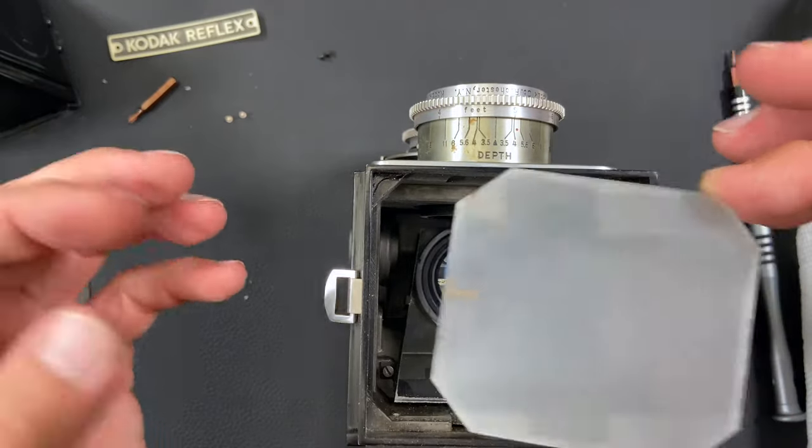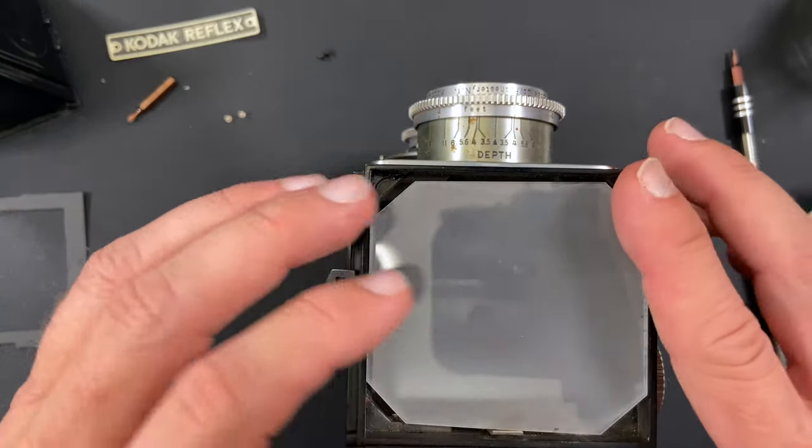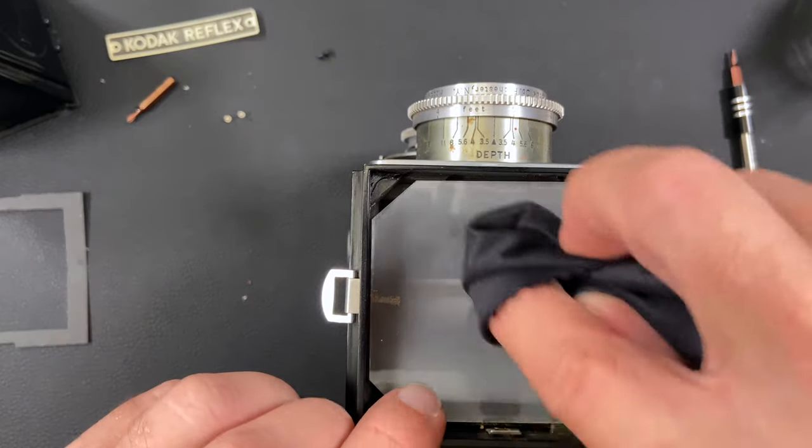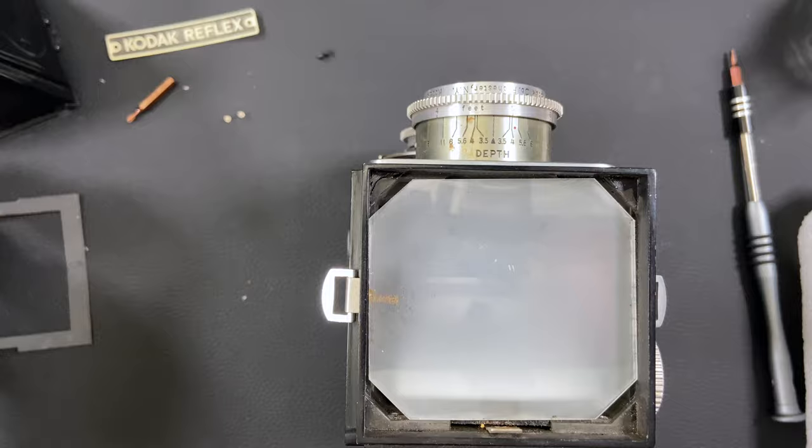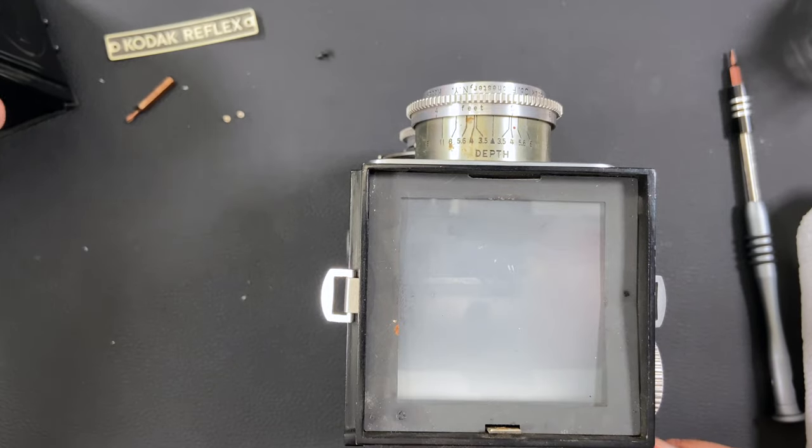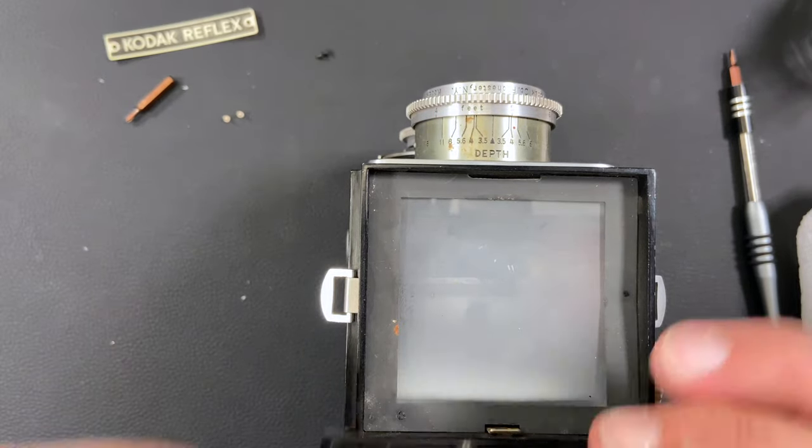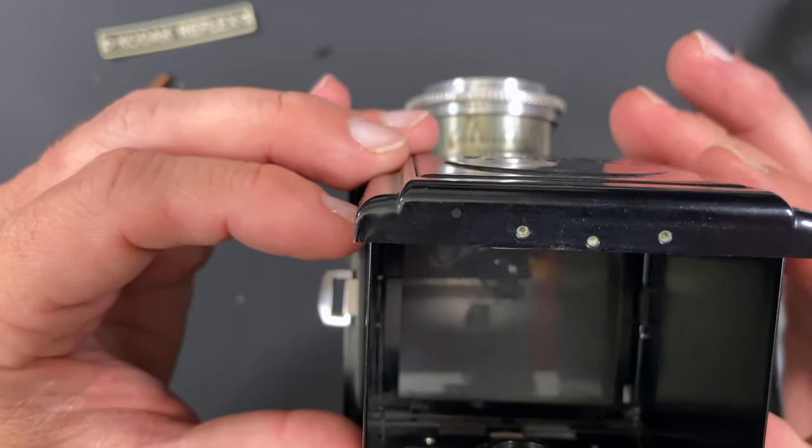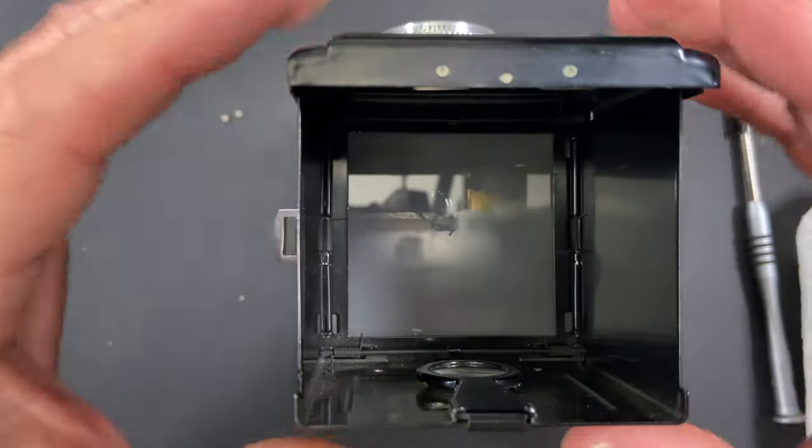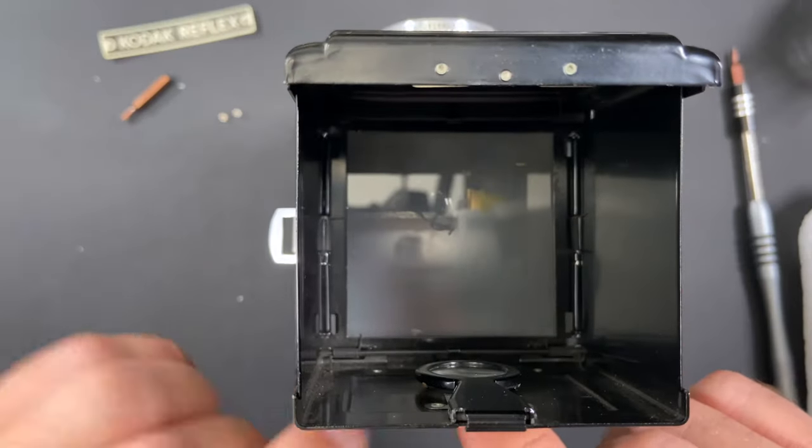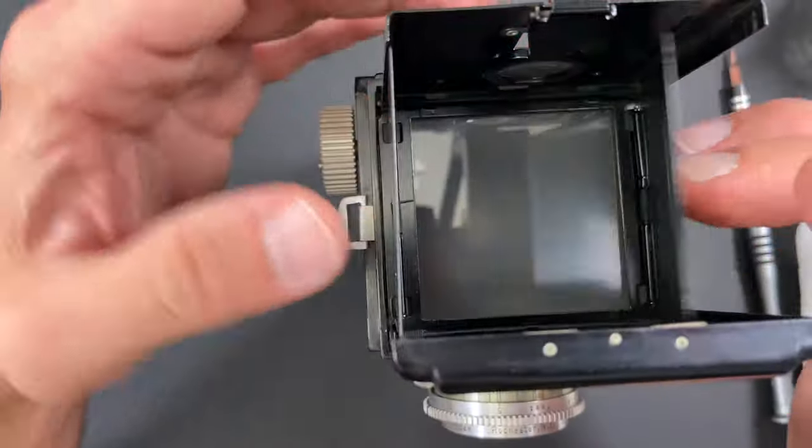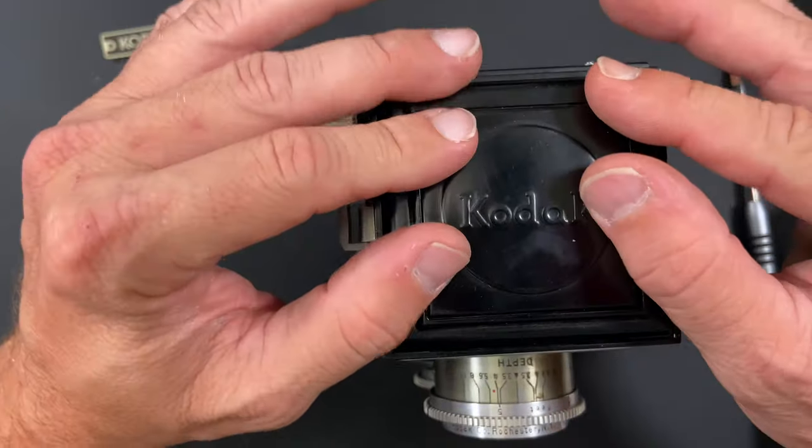And we'll go ahead and reassemble just in the opposite order. So there's the glass. The frosted side is down. The nice shiny side is up. Next thing we do is we put our little tension plate there. And then we are going to put our viewfinder back in. So you put the back in first and then it has two little tabs that go in and then the front will just slide right down. At this point I can close it back up.